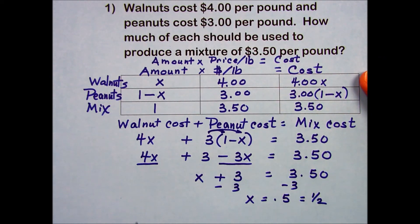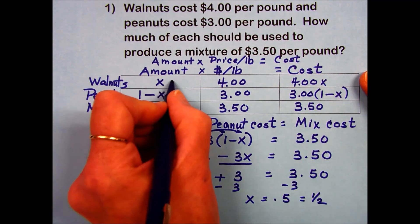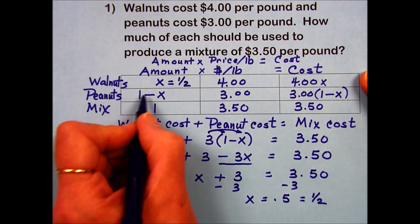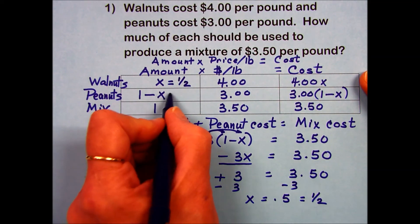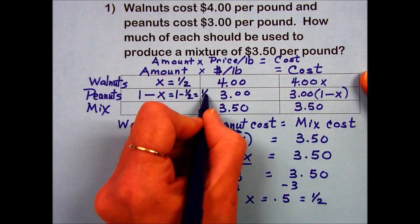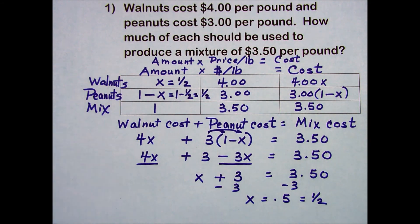What was x? x was the amount of walnuts, so we have a half a pound of walnuts in this mix. And peanuts, 1 minus x. In other words, 1 minus one-half is going to also give us one-half for the amount of peanuts as well.